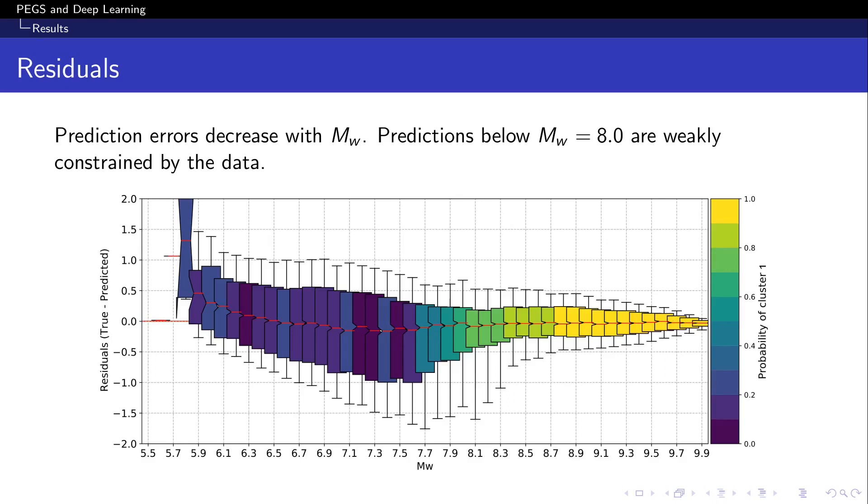This is important in the context of early warning, as those early warning systems based on the first few seconds of the P waves are known to produce saturated magnitude values for large earthquakes, let's say above 7. The advantage of our model is that it's able to distinguish between, say, a magnitude 8 and a magnitude 9, which still represents a challenge for point source algorithms employed in some of the existing early warning systems.